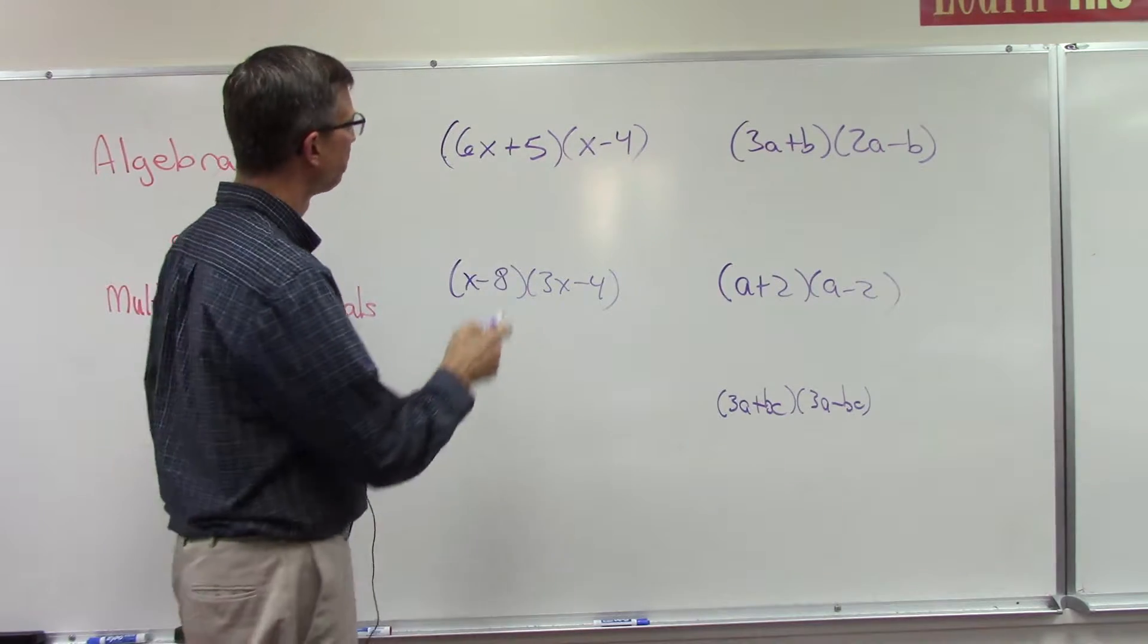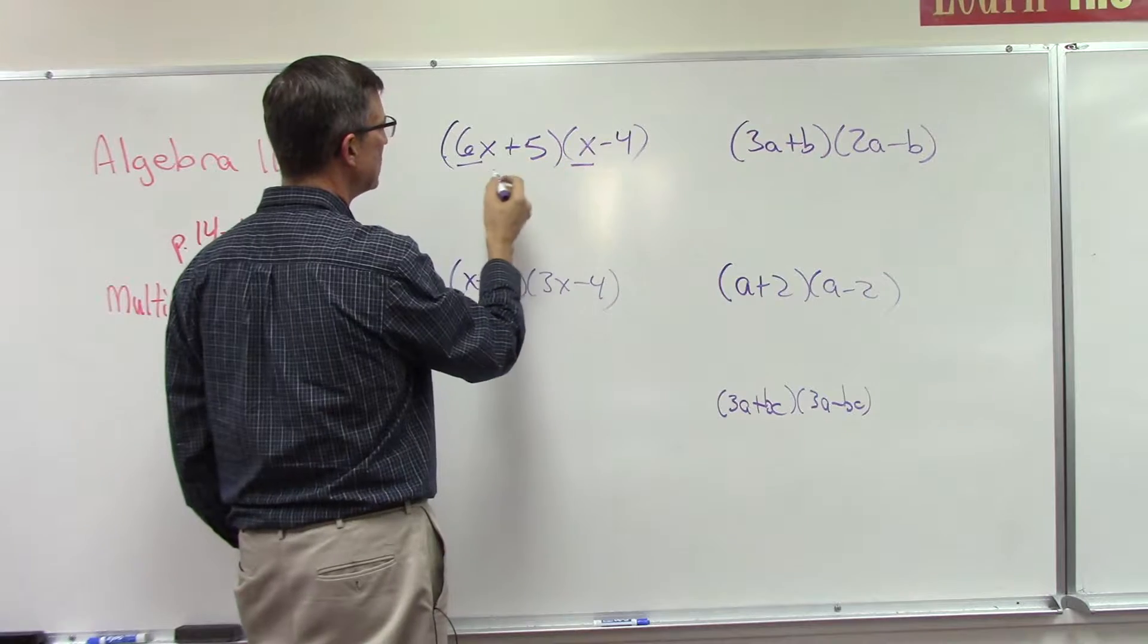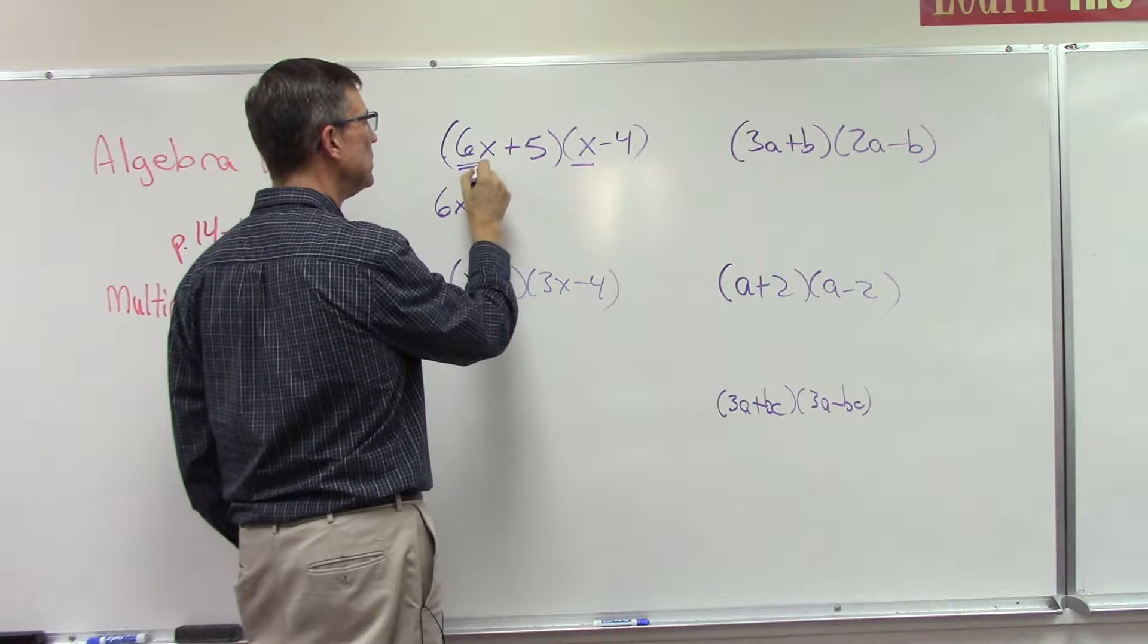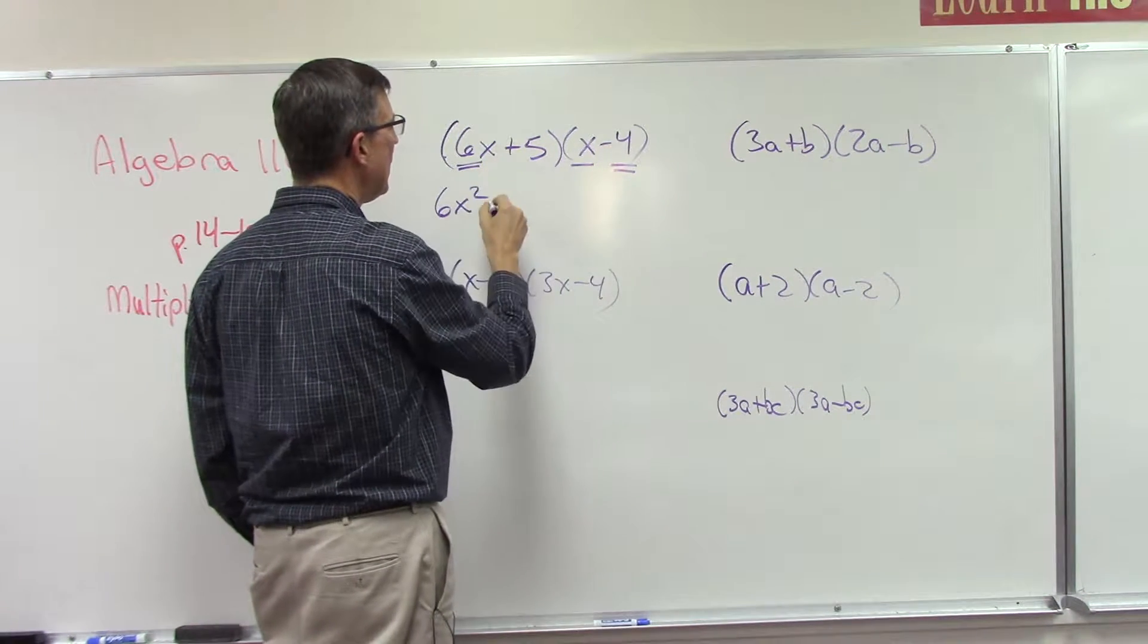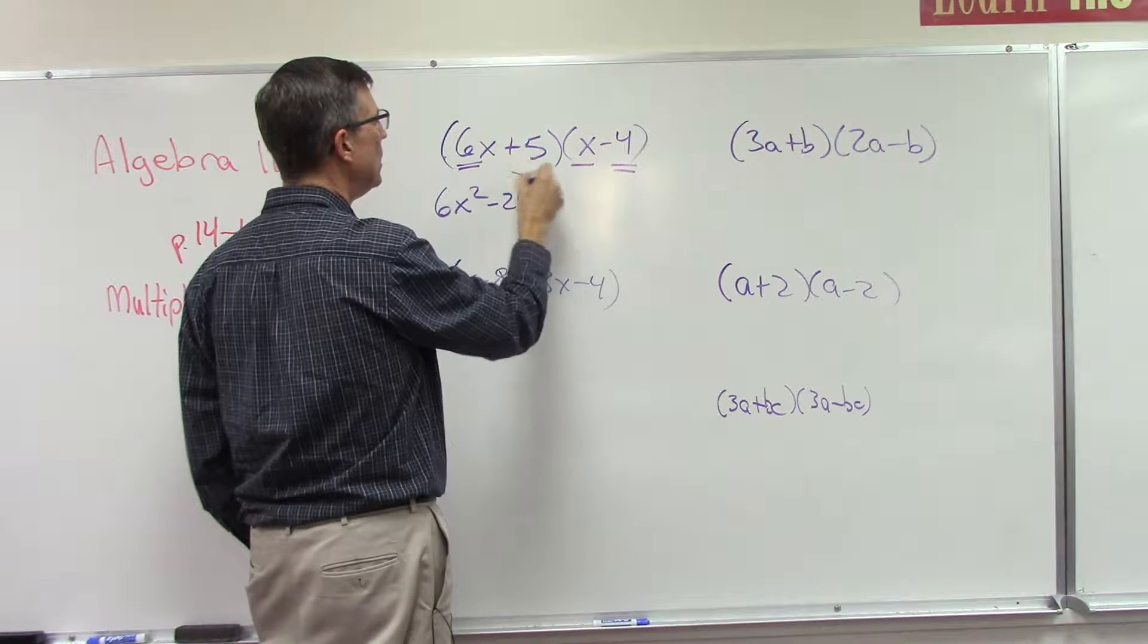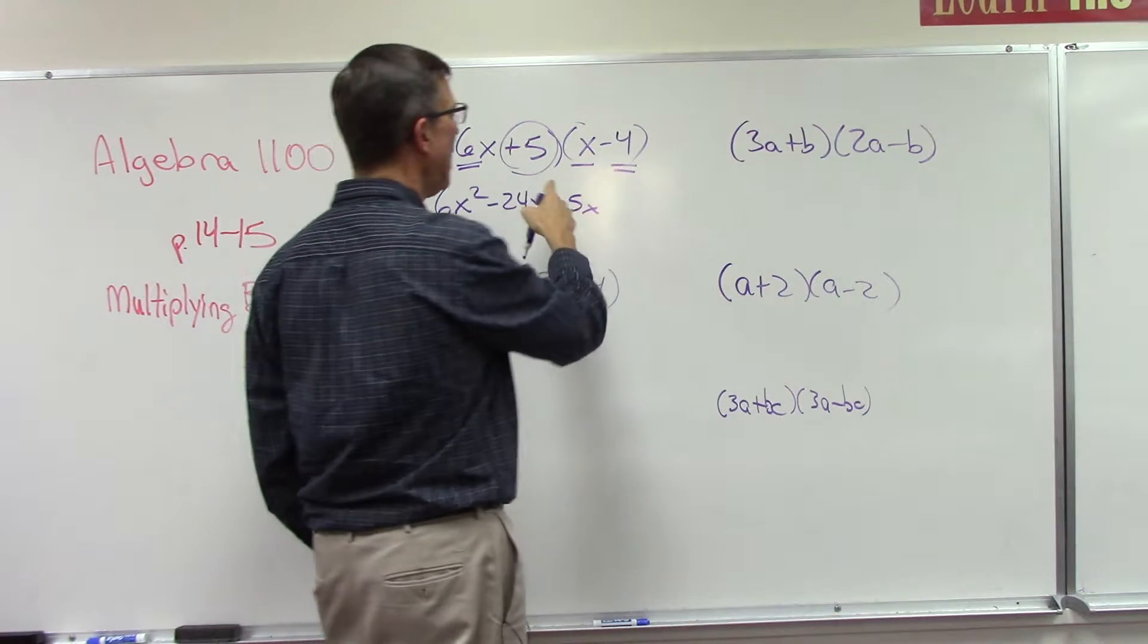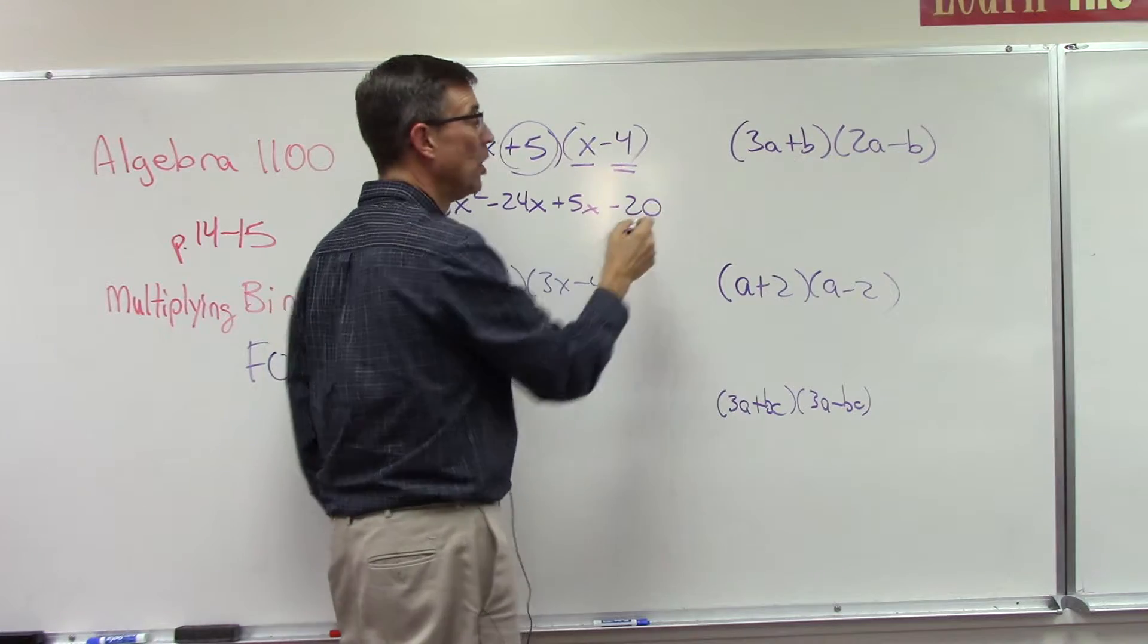Let's do this together and see what we get. The first term is 6x and x, so if I multiply just the 6x times x I get 6x squared. Now I'm going to do the outer, so 6x and negative 4. Keep this negative with the 4 and that would give me negative 24x. Now the inner, positive 5 times x, so positive 5x. And then the last term, we take the positive 5 times the negative 4 and we get negative 20.